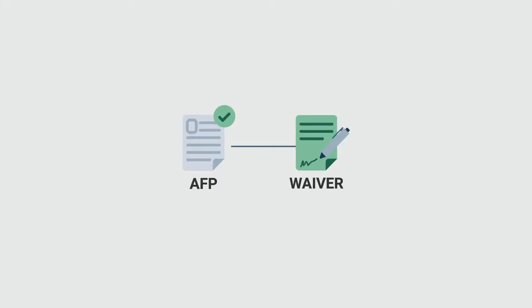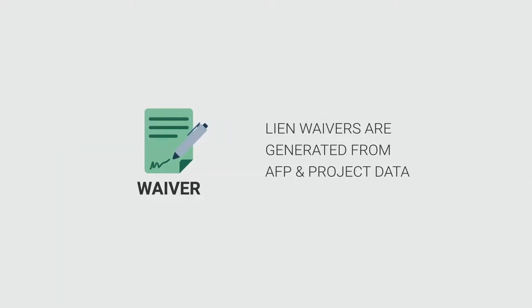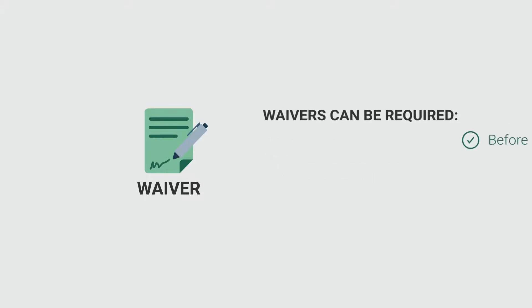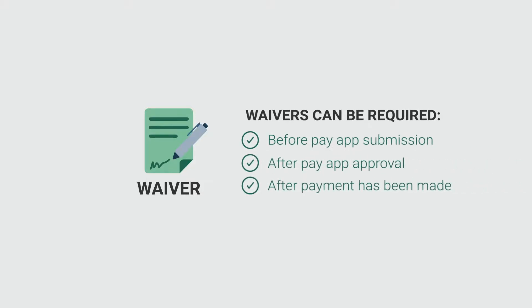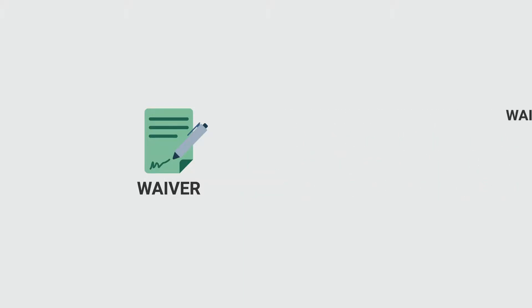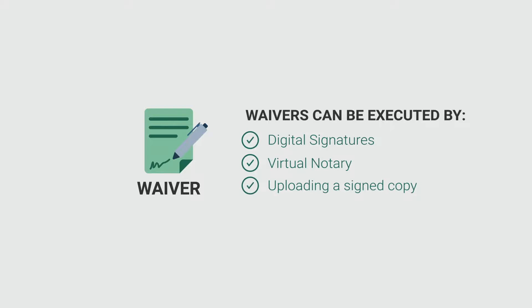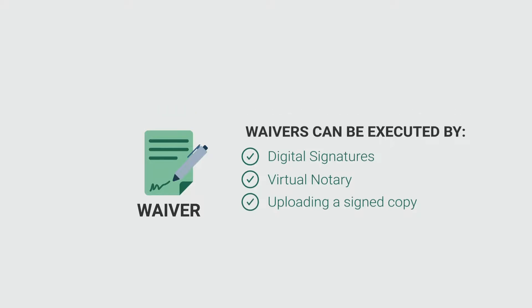Lien waivers in GCPay are generated using data directly from the payment application, ensuring all waivers are accurate. You can require lien waivers at any time during the payment application process, including before payout submission, after payout approval, or after payment has been made. Users can sign or notarize waivers online or upload a signed copy.